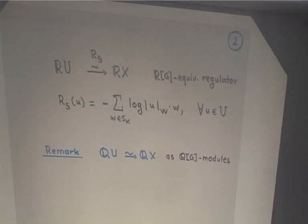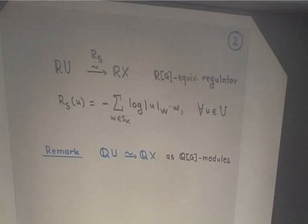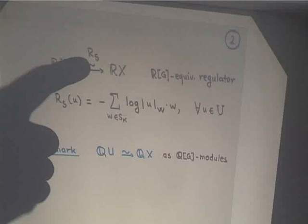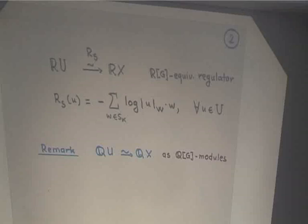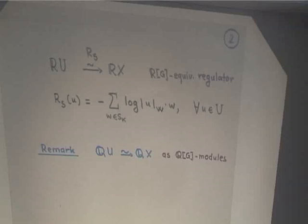An elementary application of representation theory of finite groups tells you that since these two modules RU and RX are in fact defined over Q — obtained from Q[G]-modules by tensoring with R — and they are isomorphic over R, they are in fact isomorphic over Q as well. So there should be a Q[G]-module isomorphism between QU and QX. There is one, but it's not a canonical one. However, if you view these as integral representations — as Z[G]-modules — the two are by no means isomorphic. We understand X as a Z[G]-module, but we have no idea about the Z[G]-module structure of U.